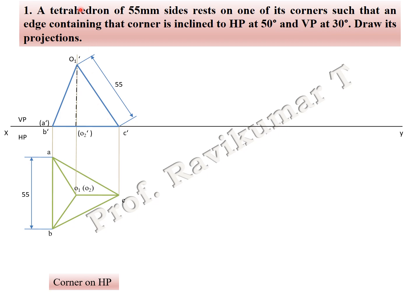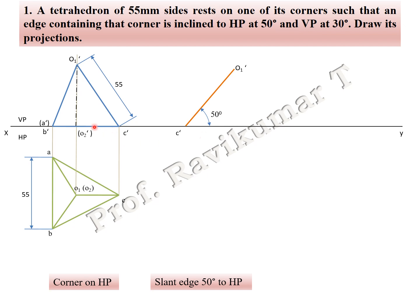The edge containing that corner is inclined to HP at 50 degrees — which is the edge. This corner-containing edge is inclined to HP at 50 degrees. We have to take the inclination at 50 degrees to HP, then place it and convert it back — you have to rotate it.